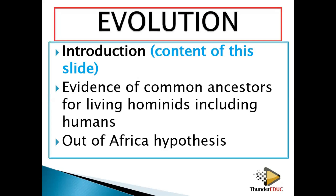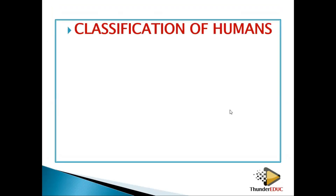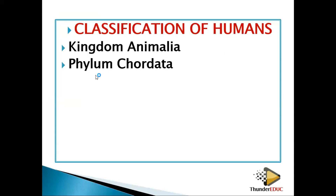Let's look at the classification of humans — where do you belong? Number one, Kingdom: we belong to Animalia, meaning we are animals. Phylum: Chordata, meaning we have a backbone. Note that a backbone is not exactly the same as the spinal cord, because there are some animals which have a spinal cord but do not have a backbone.